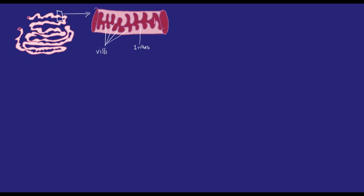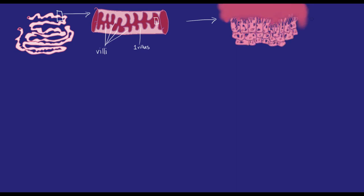If we zoom in further, we find that the surface of each villus is made up of hundreds of epithelial cells. Each of those cells has an increased surface area by having microvilli on the side that meets the inside of the intestine.